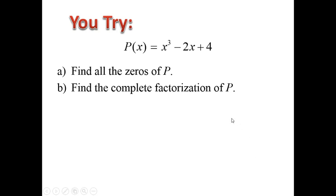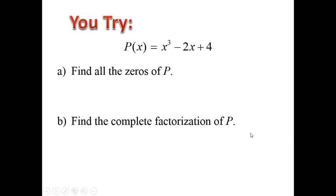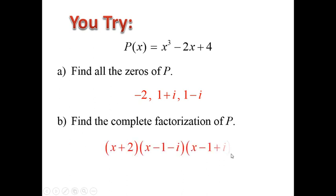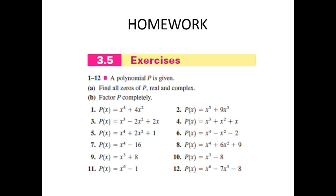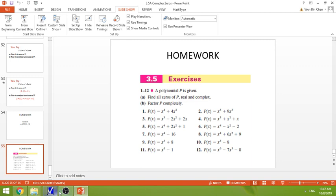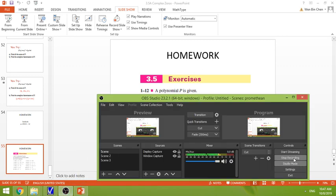Here's a problem you can try. This one is a cubic trinomial. Again, there are two parts: first find all the zeros — try to factor, and if not factorable, use P over Q and synthetic division. Then write the complete factorization. Thank you for watching the video today.